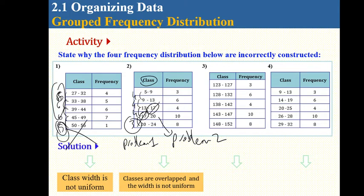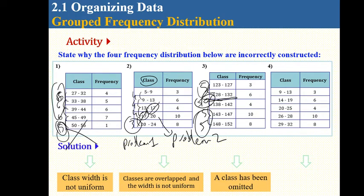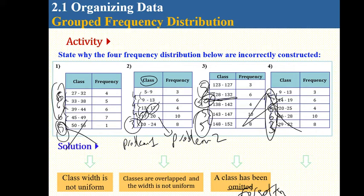Another incorrectly constructed distribution has class widths of 5, 10, 5, 5 — a class has been omitted or forgotten. Another example shows widths of 5, 6, 6, 3 — they're not the same, which is the problem. The classes must be uniform in width.